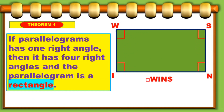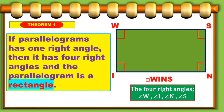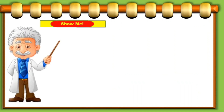So what are the four right angles here? We have angle W, angle I, angle N, and angle S. So let's take a look at this problem.